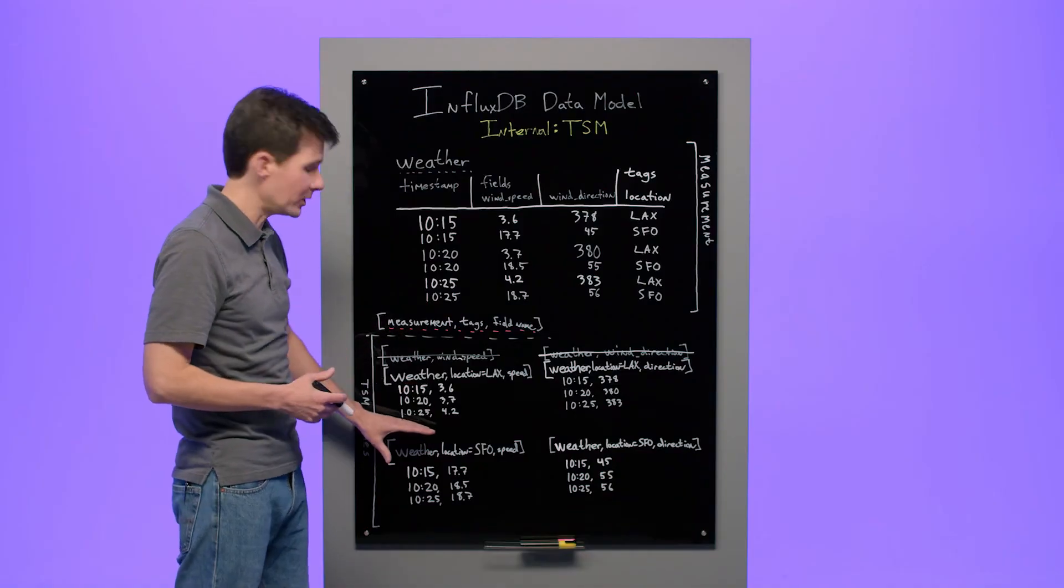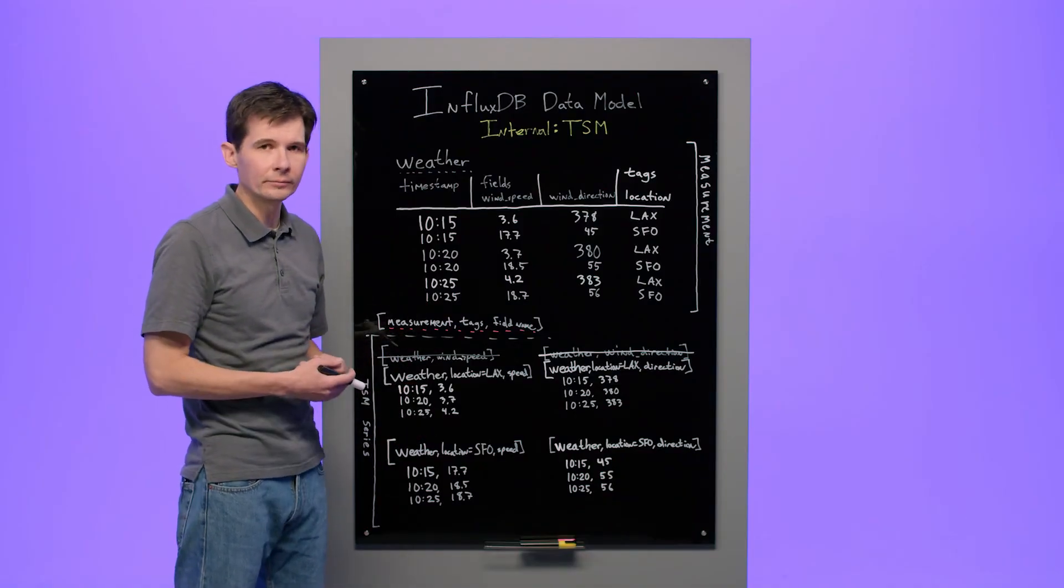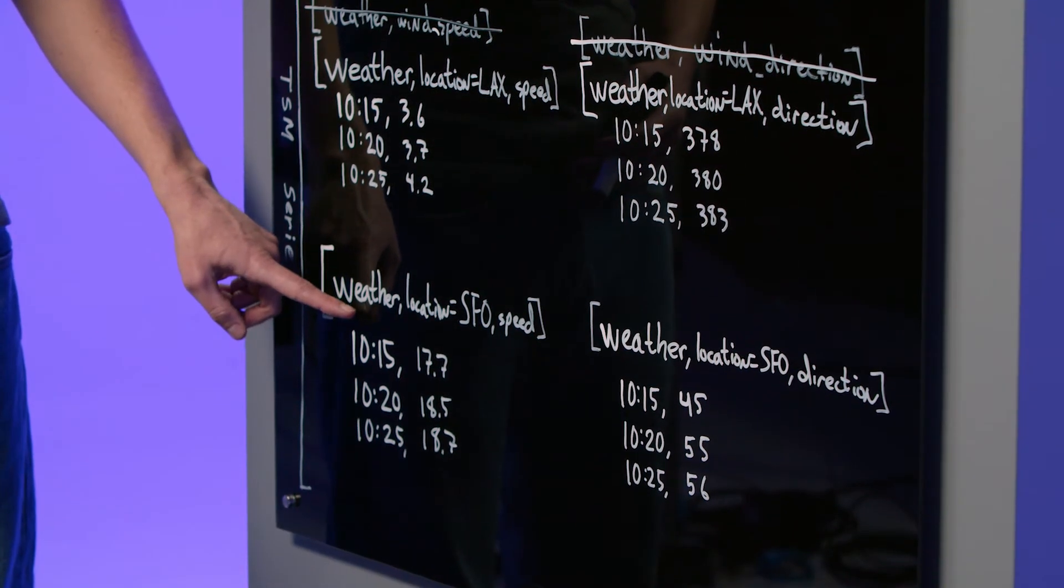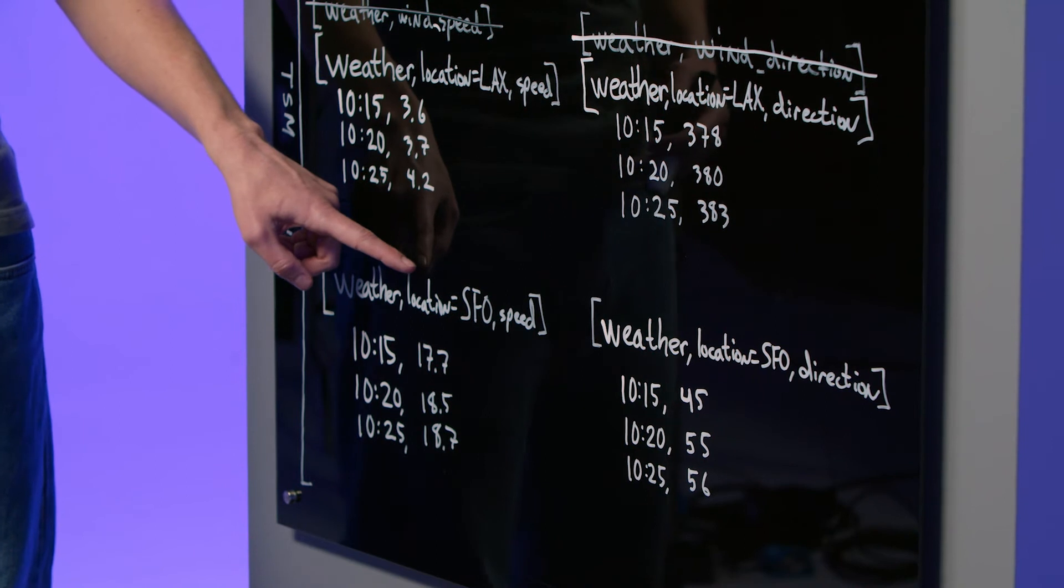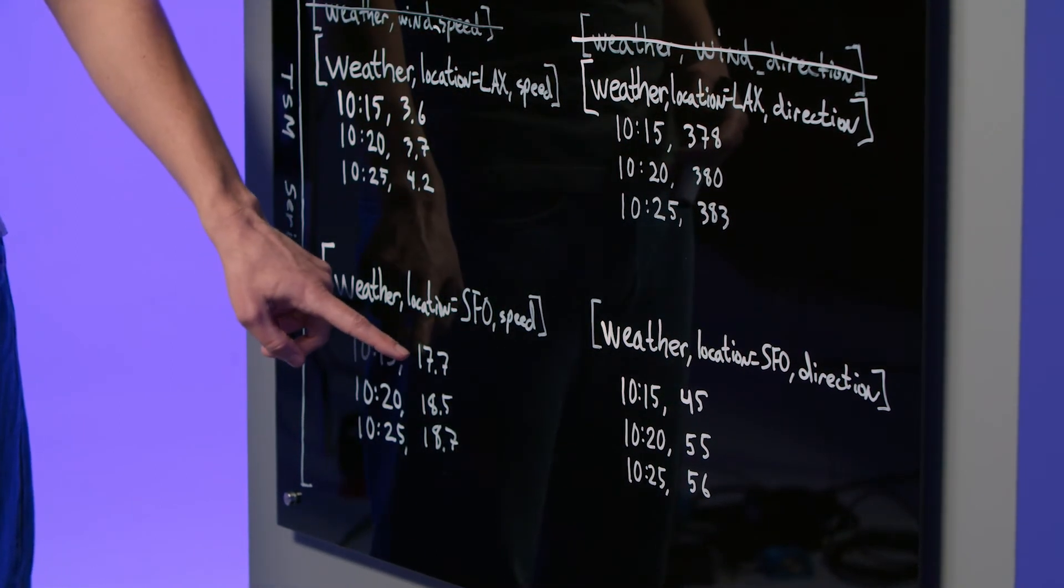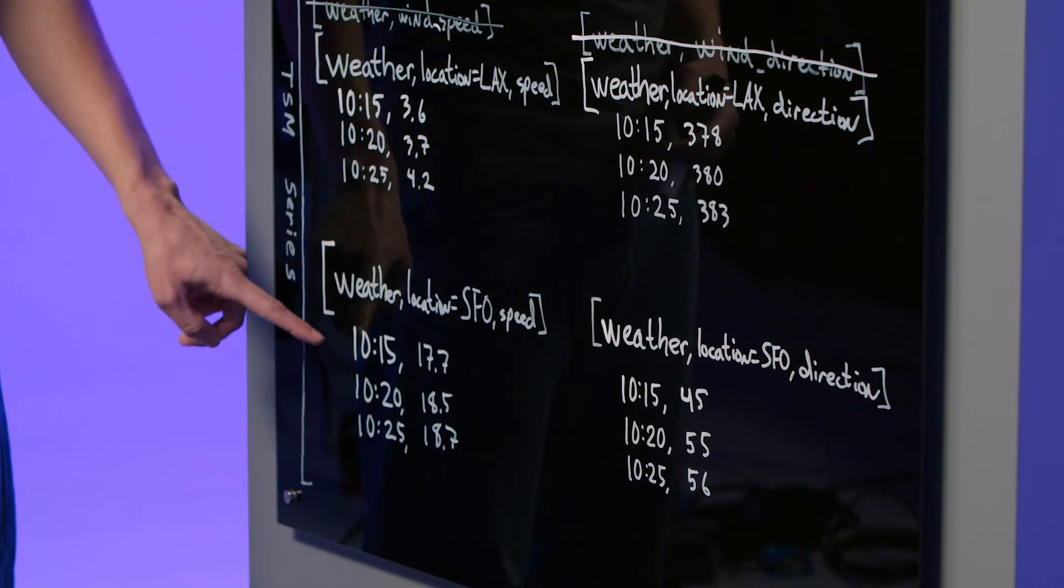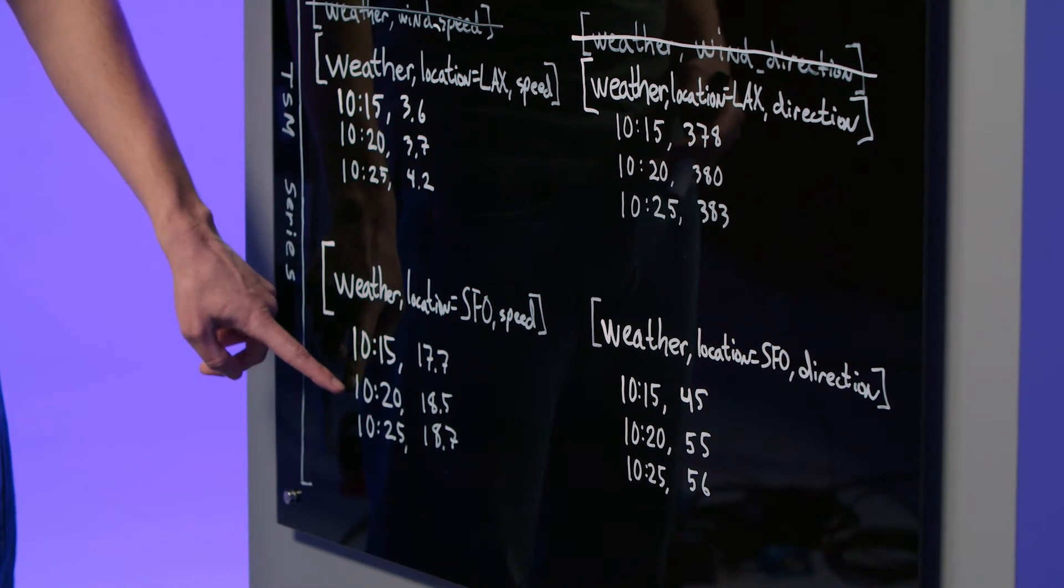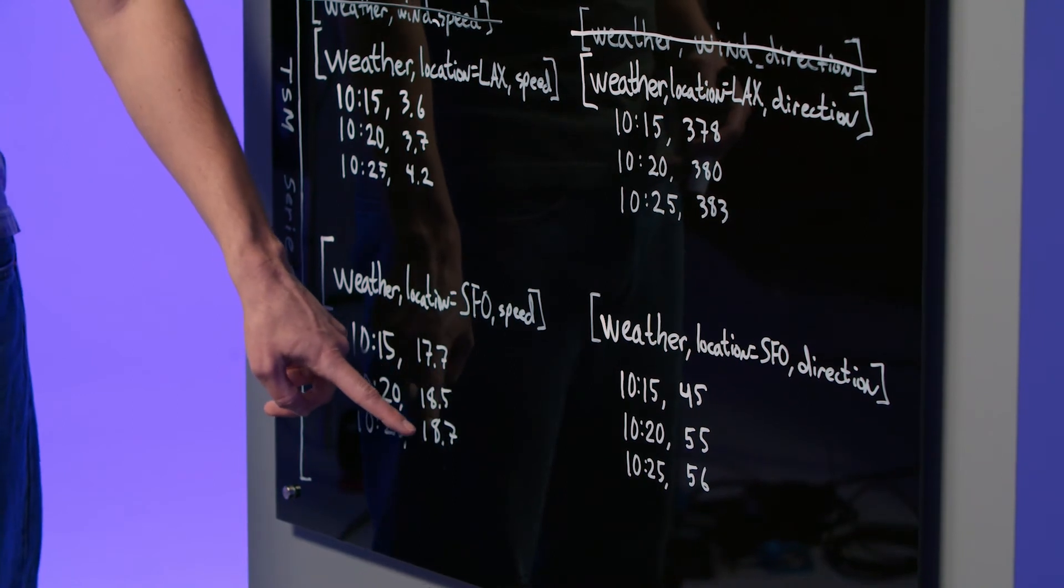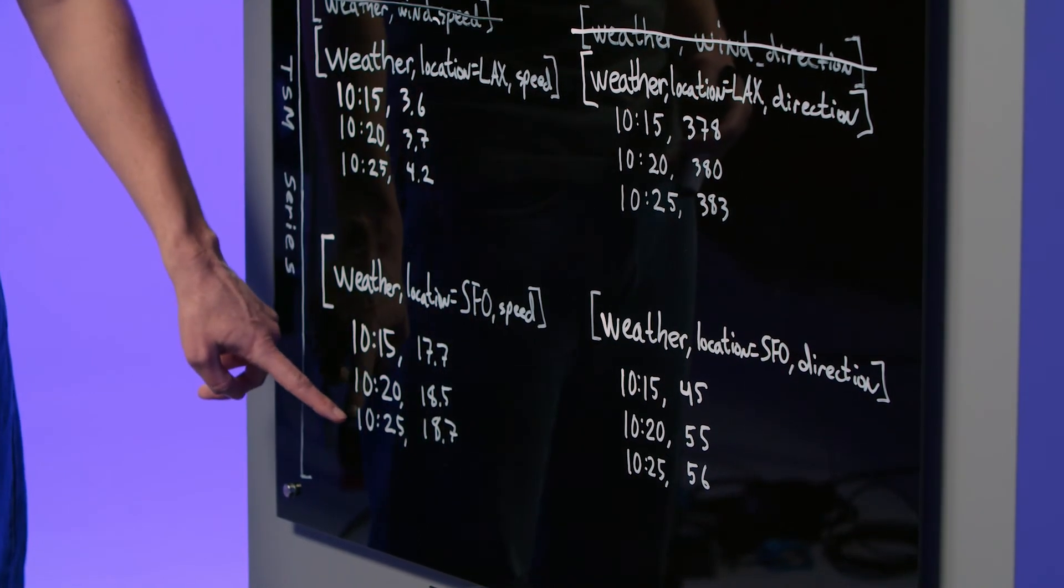I'll read this series in plain English terms again. According to this series, the weather measurement indicates that in San Francisco, the wind speed was 17.7 knots at 10:15, at 10:20 was 18.5 knots, and the wind speed was 18.7 knots at 10:25.